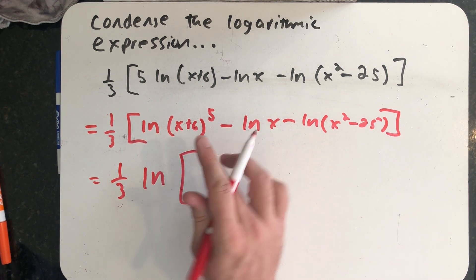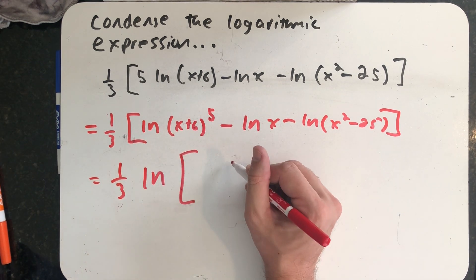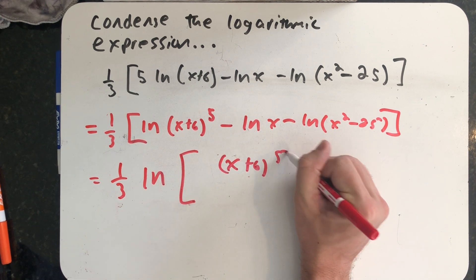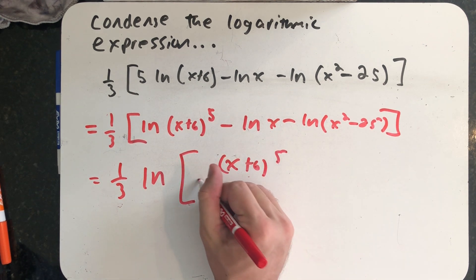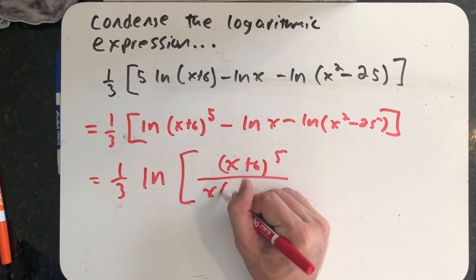All right, so I have the natural log of the positive thing x plus six to the fifth on top, x times x squared minus 25 on the bottom.